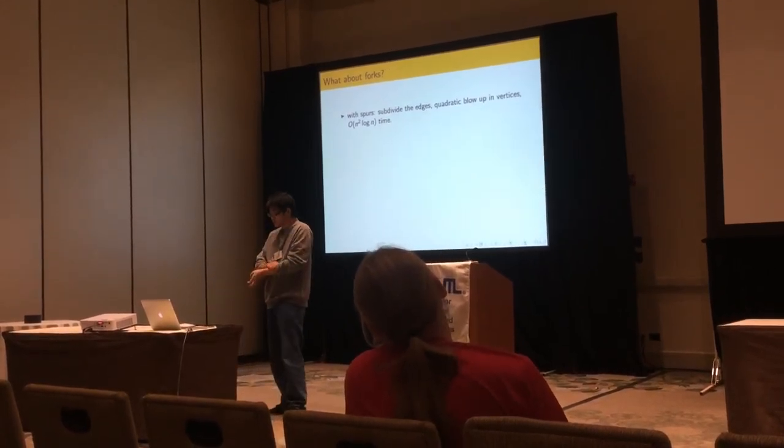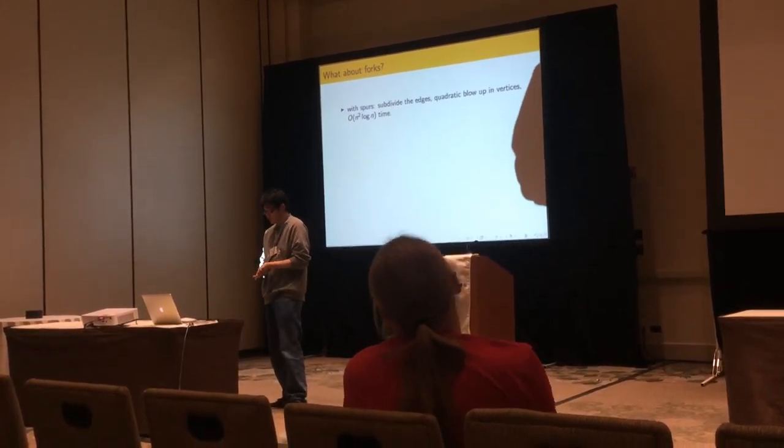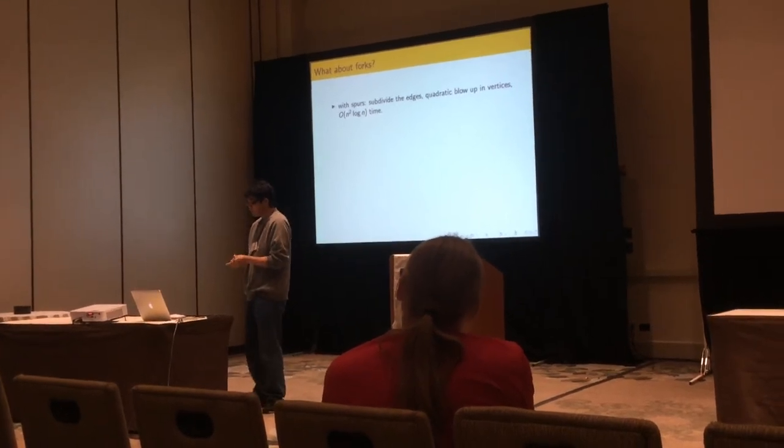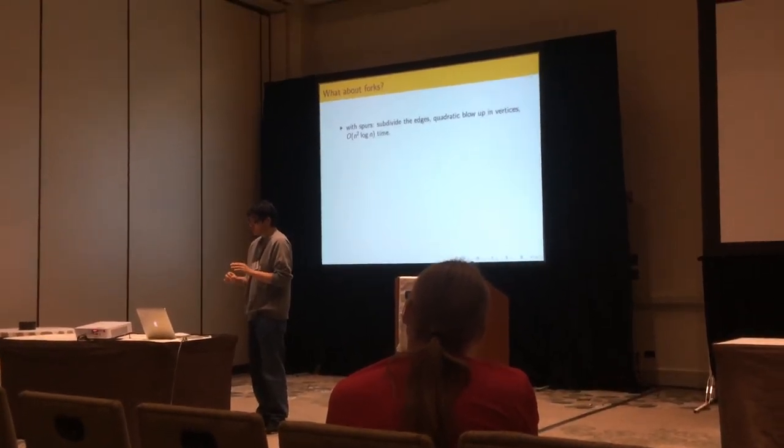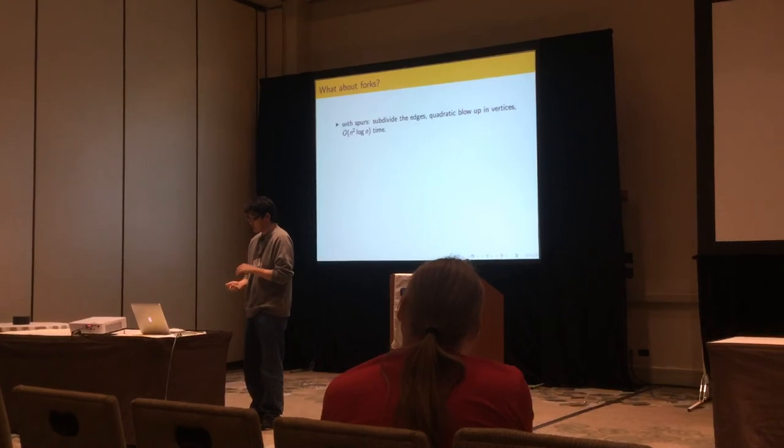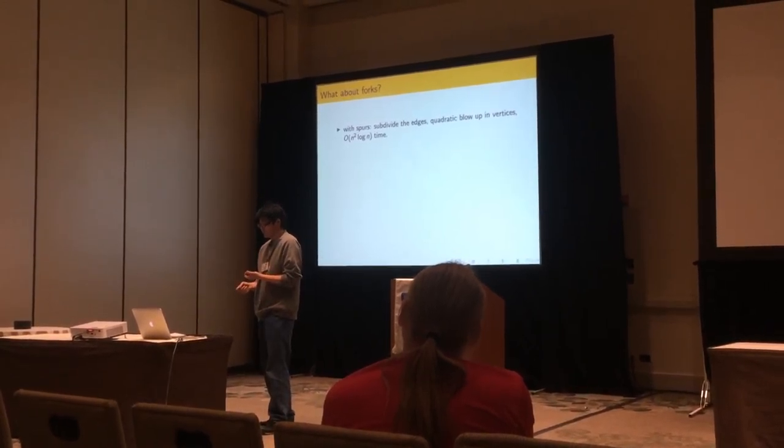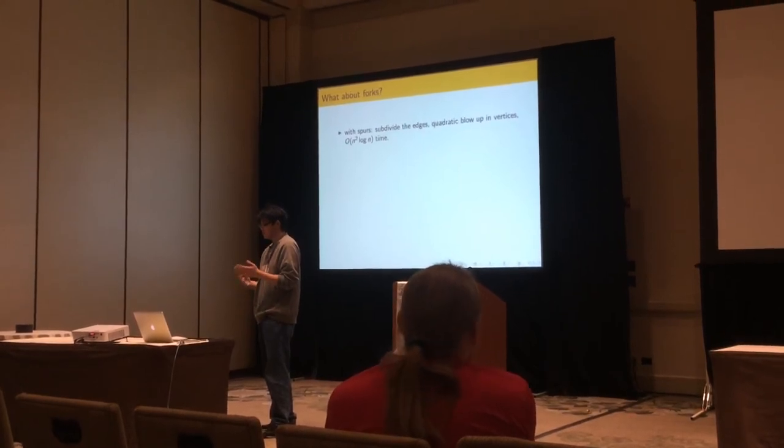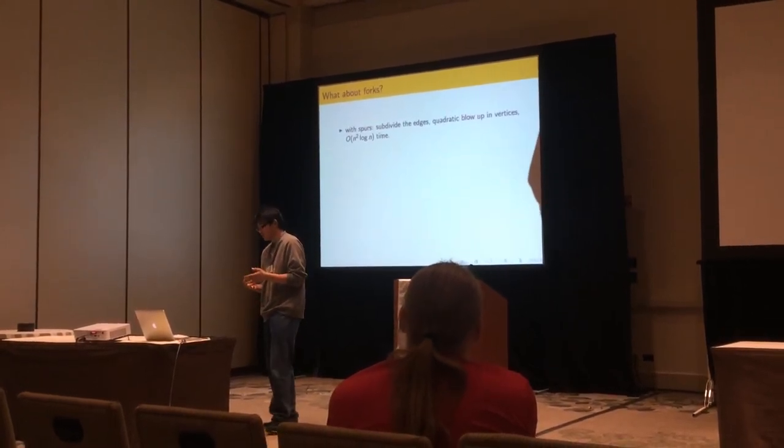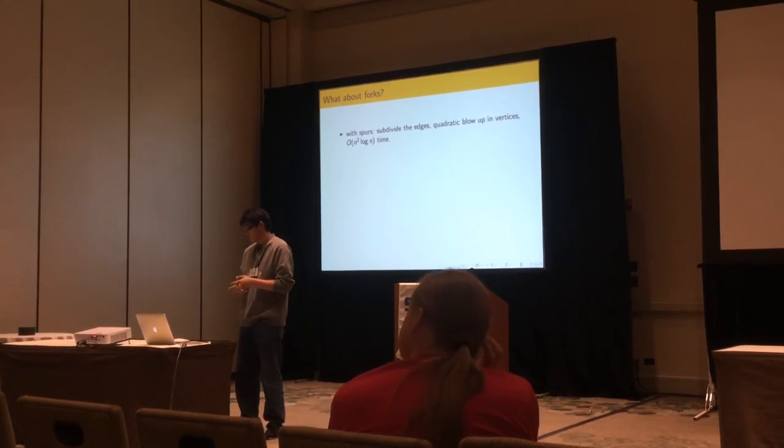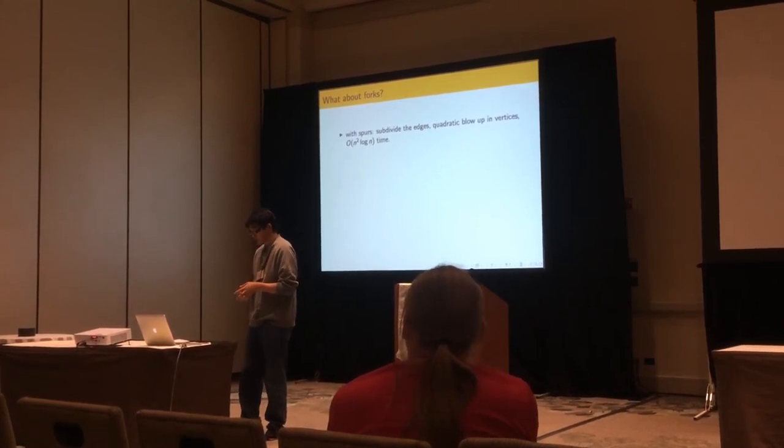So we assumed the polygon does not have forks. So what happens if there are forks? If the polygon has forks and spurs, what we do is subdivide them. And this will give us a quadratic blow-up of the number of vertices. Therefore, this gives us the O(n squared log n) algorithm.